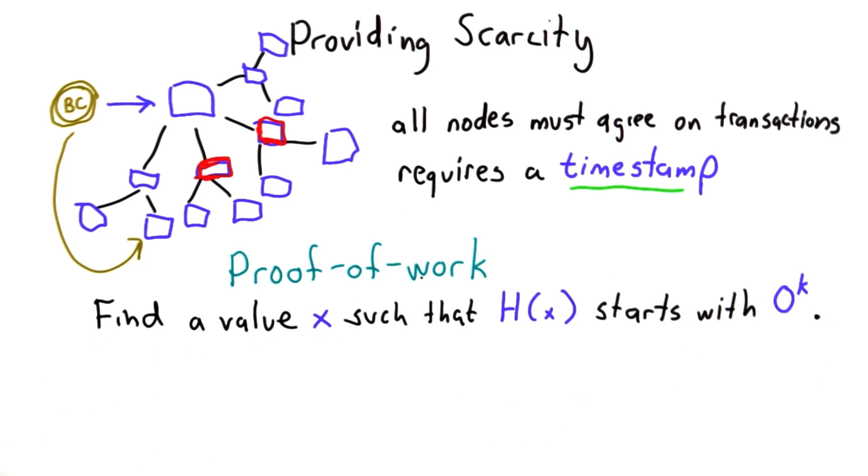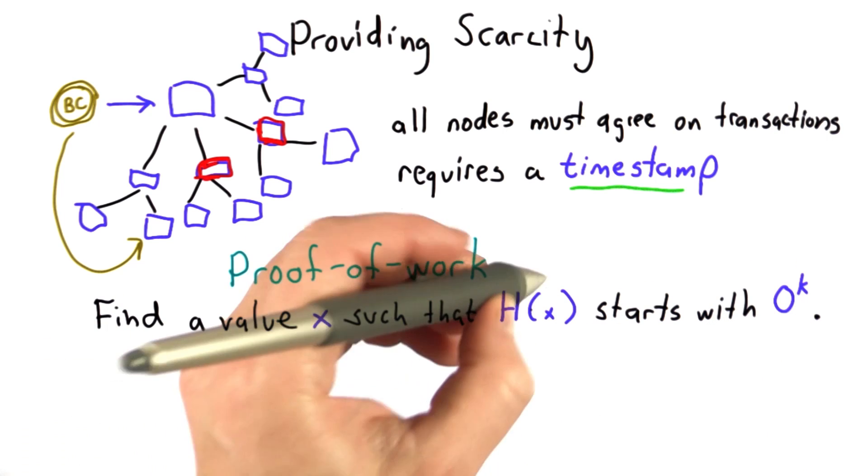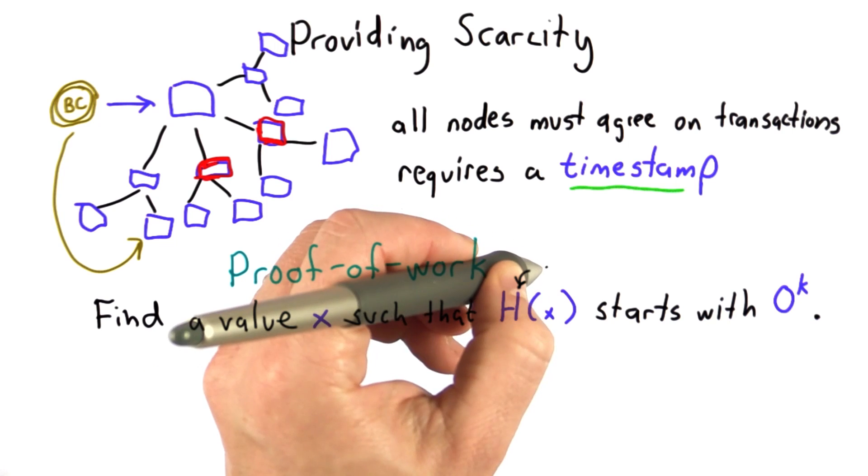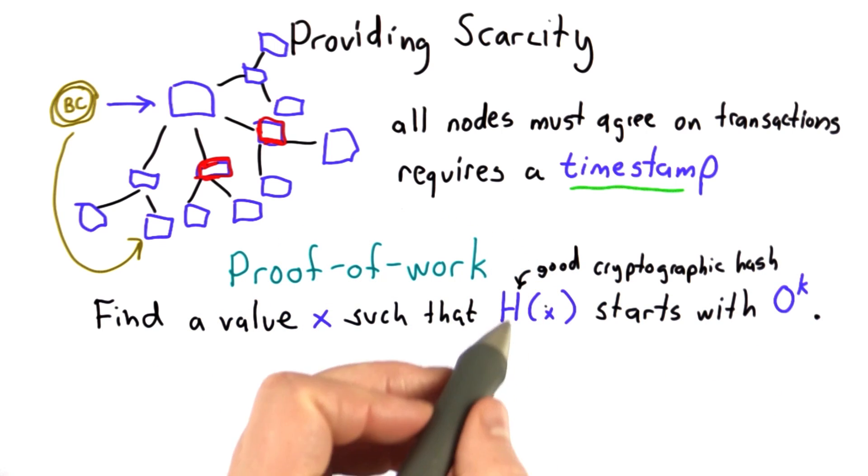So here's a way to do a proof of work. In order to prove you've done some amount of work, you need to find a value of x where the hash of x starts with some number of zeros. Doing that requires work if this is a good cryptographic hash function. At least if we have a random oracle assumption about that hash function, the only way to find such an x value is to keep guessing and looking at the output. So you need to do the amount of work necessary to find that output.